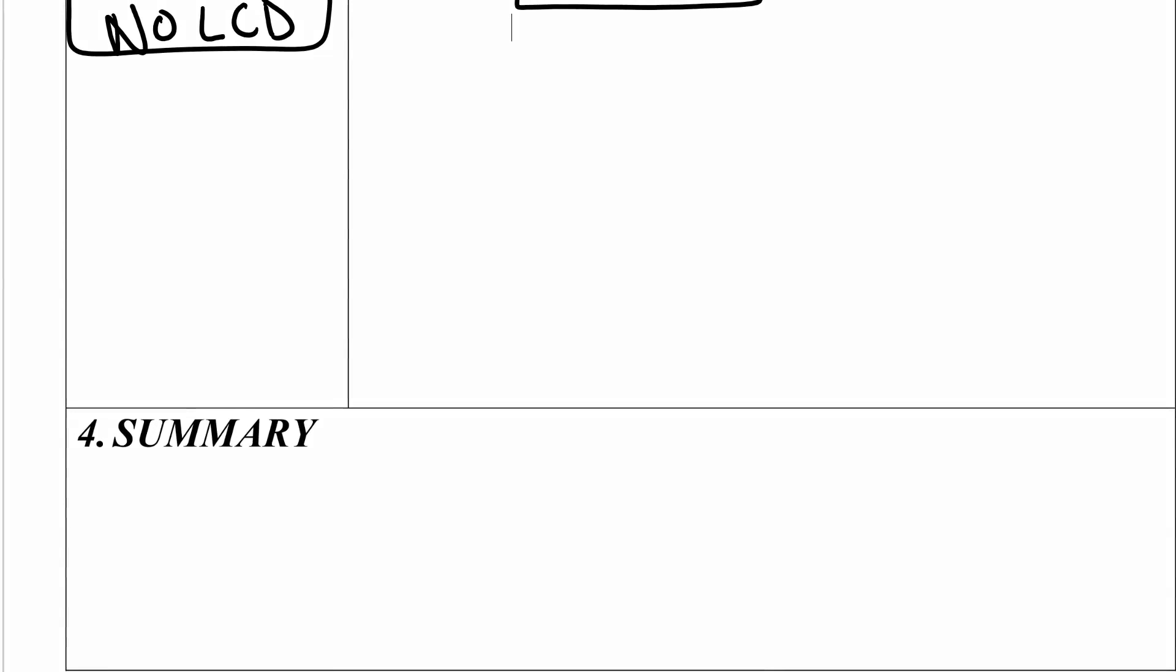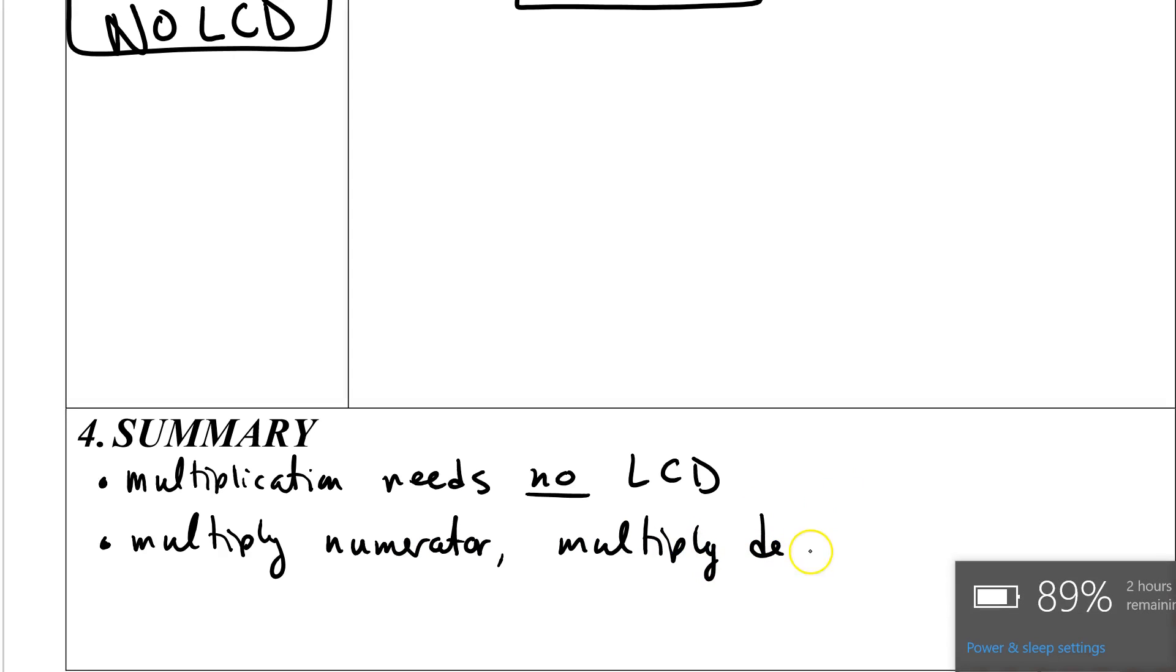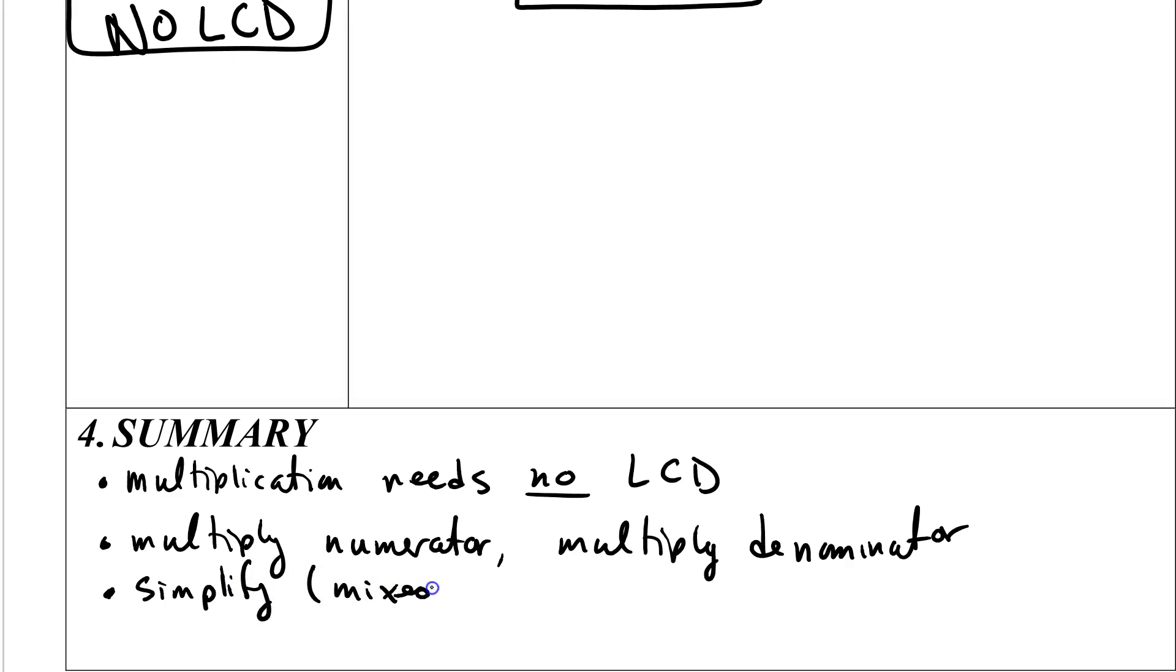The summary to this one is multiplication means no lowest common denominator, multiply numerator, multiply denominator, and then simplify. So that means mixed number, lowest terms.